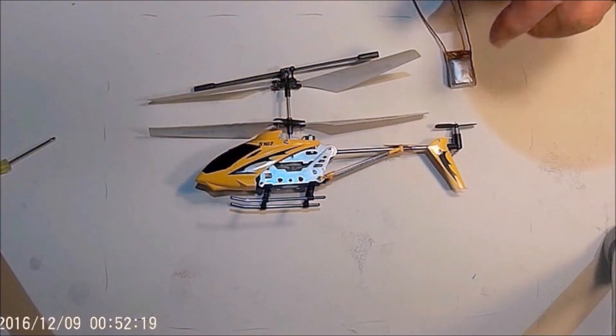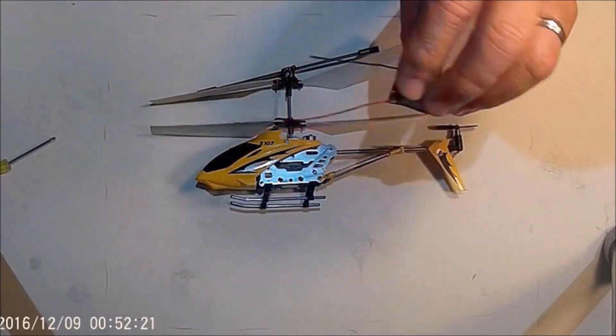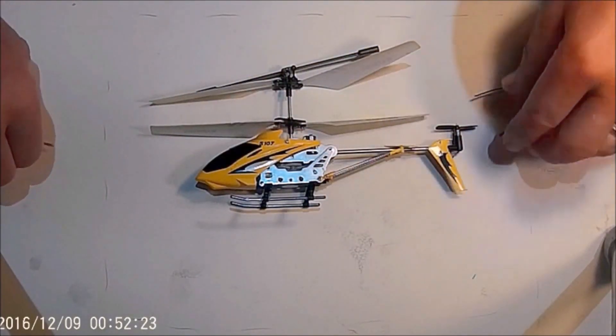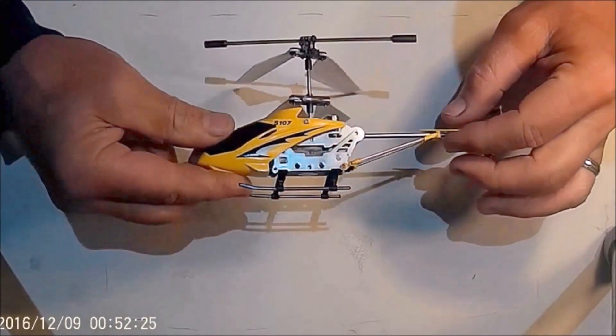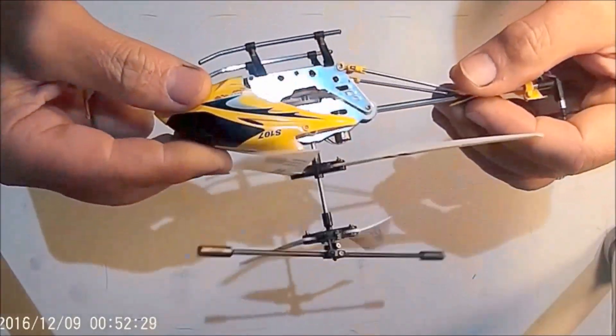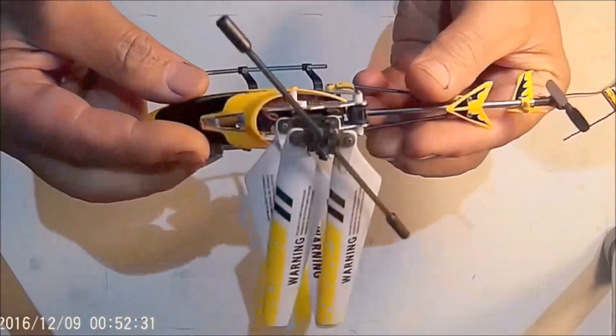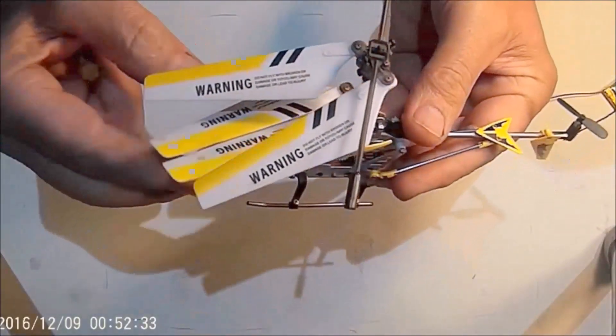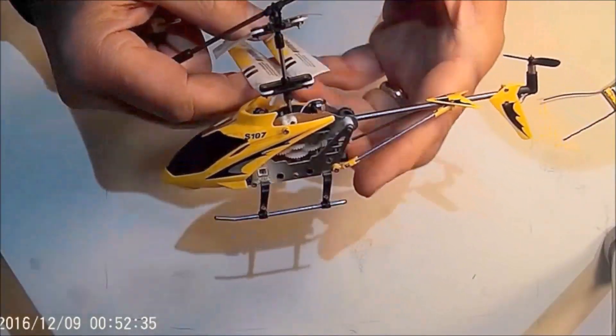Okay, today we're gonna replace the battery on this little remote control helicopter. It's an S-107. They're rather clever, real lightweight, real fun to work with, but what you're gonna find out is that the batteries are kind of short-lived.